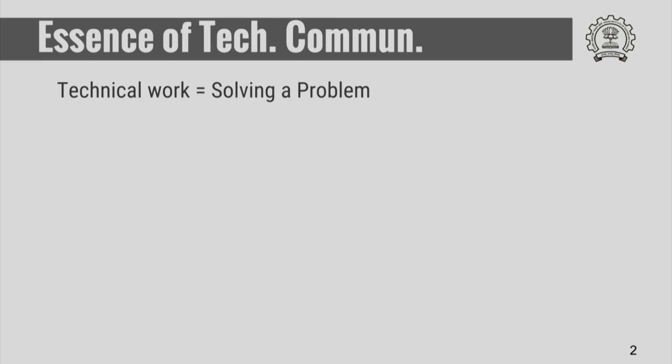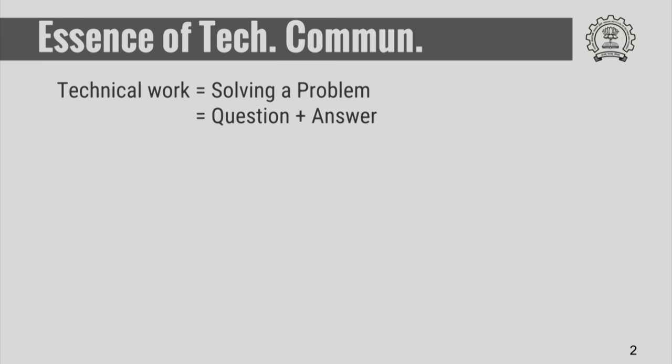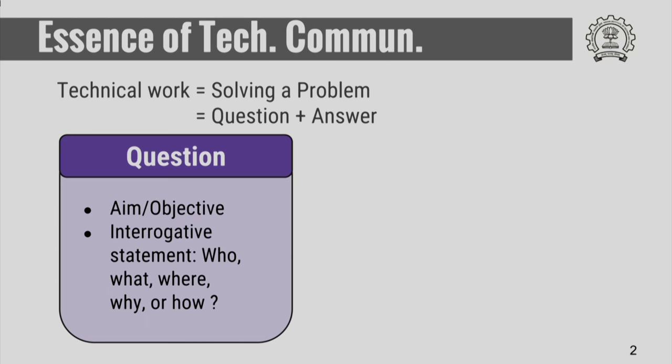Welcome. In this lecture I am going to talk about types of scientific literature. To begin with, let us quickly review what is the essence of technical communication. Any technical work actually attempts to solve a problem. The essence of any technical communication can be stated in terms of two things: one is the question posed or the scientific inquiry conducted, and the other is the answer arrived at by conducting the scientific inquiry. This question could be stated in terms of aim or the objectives of the investigation.